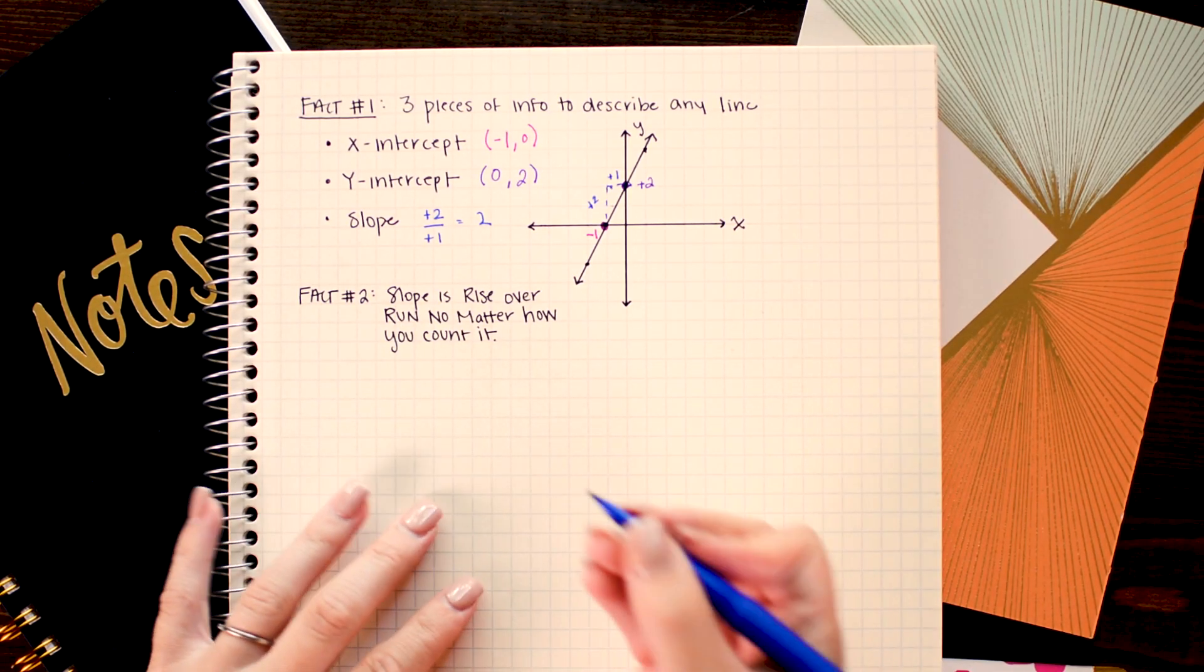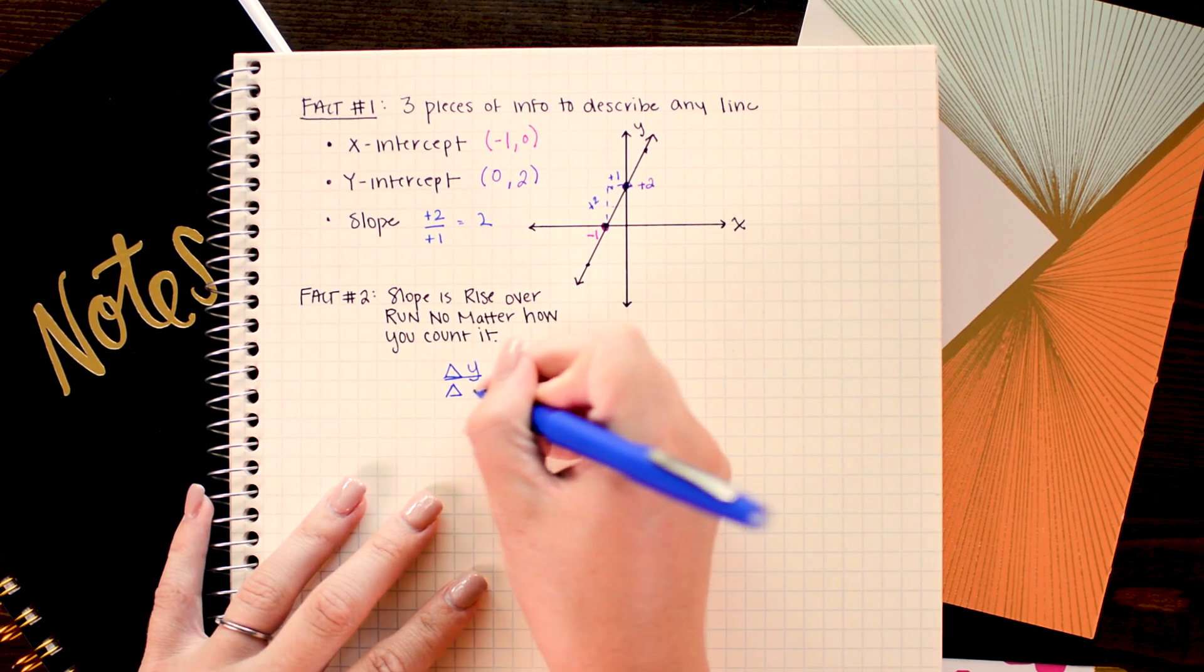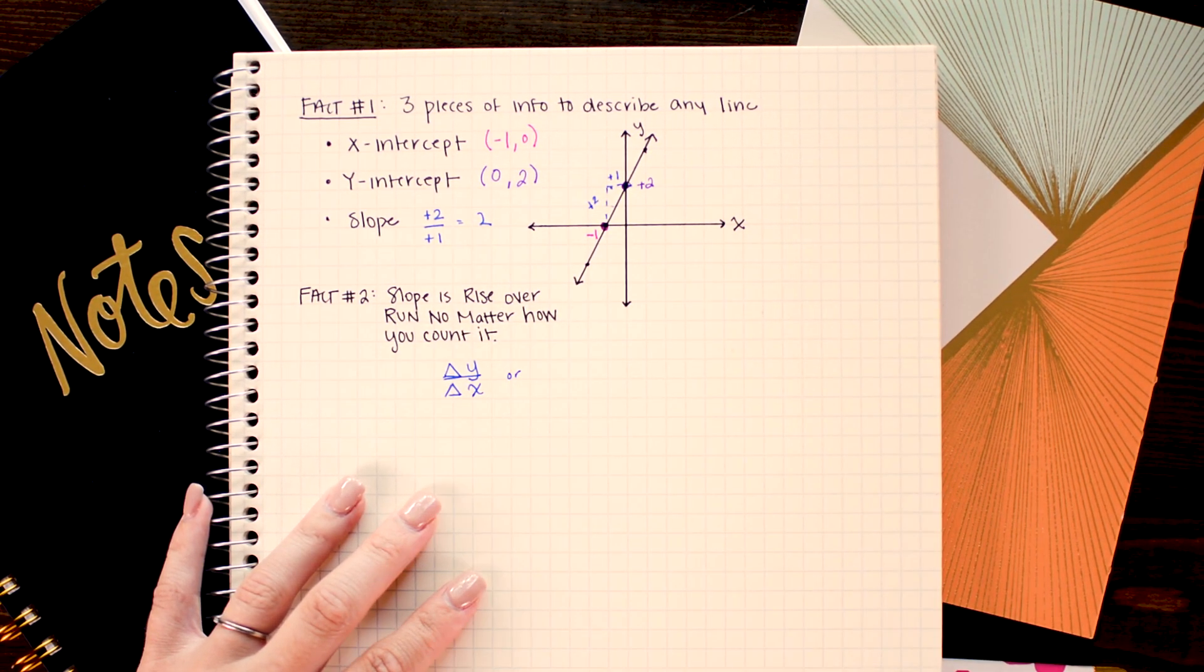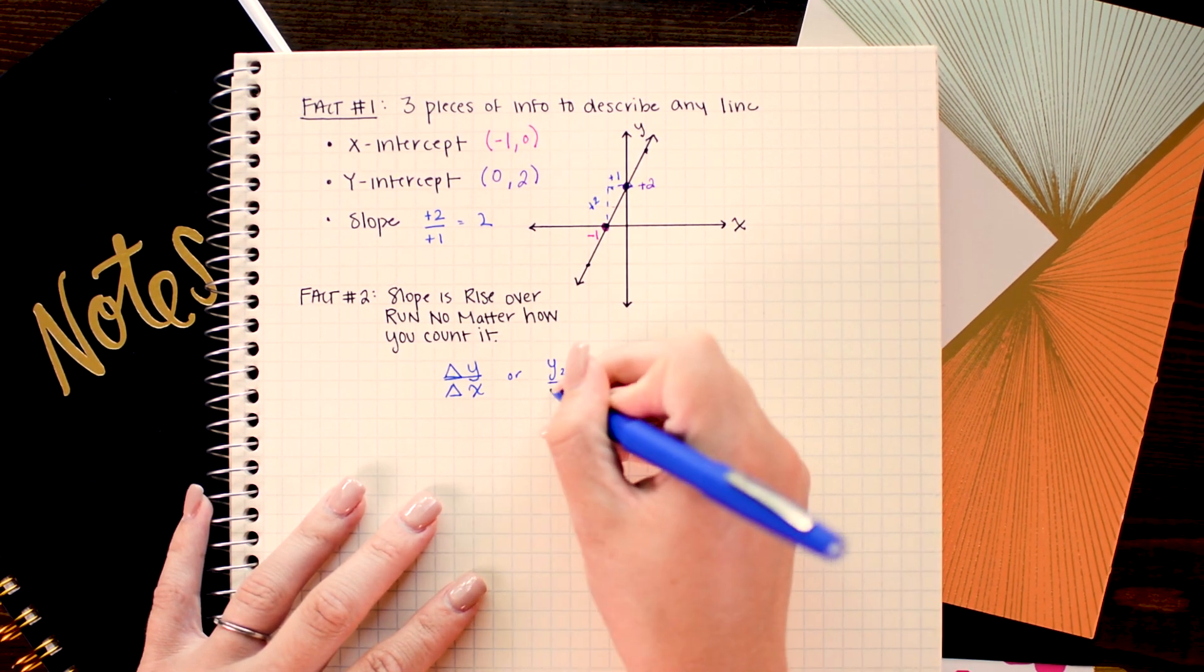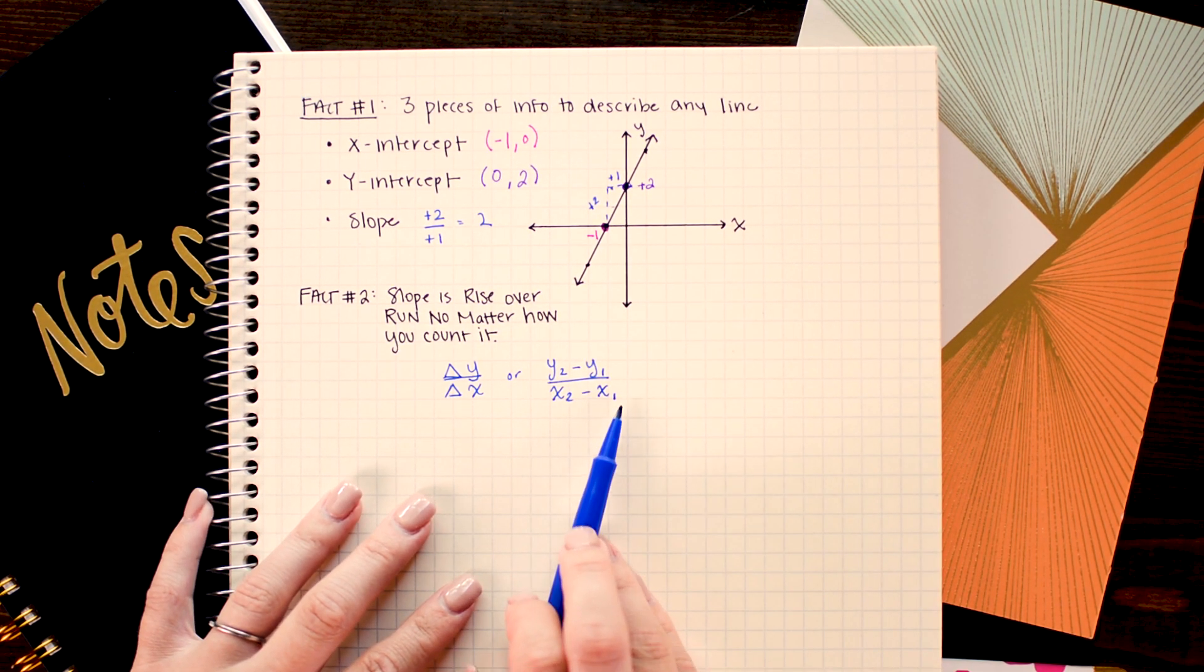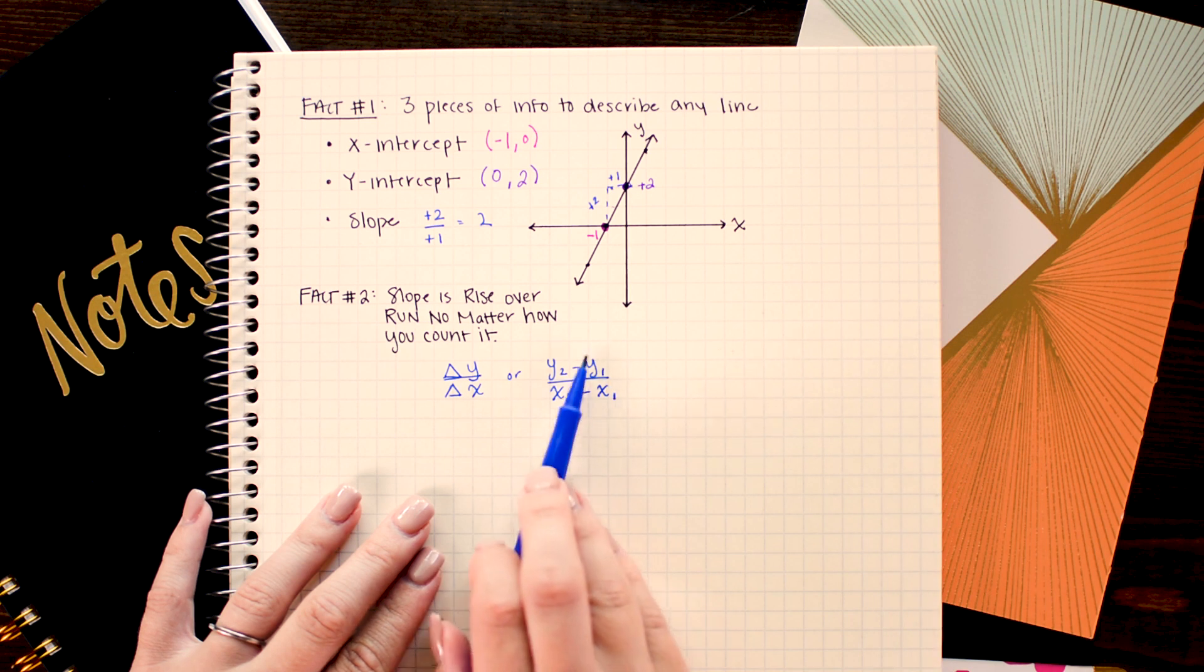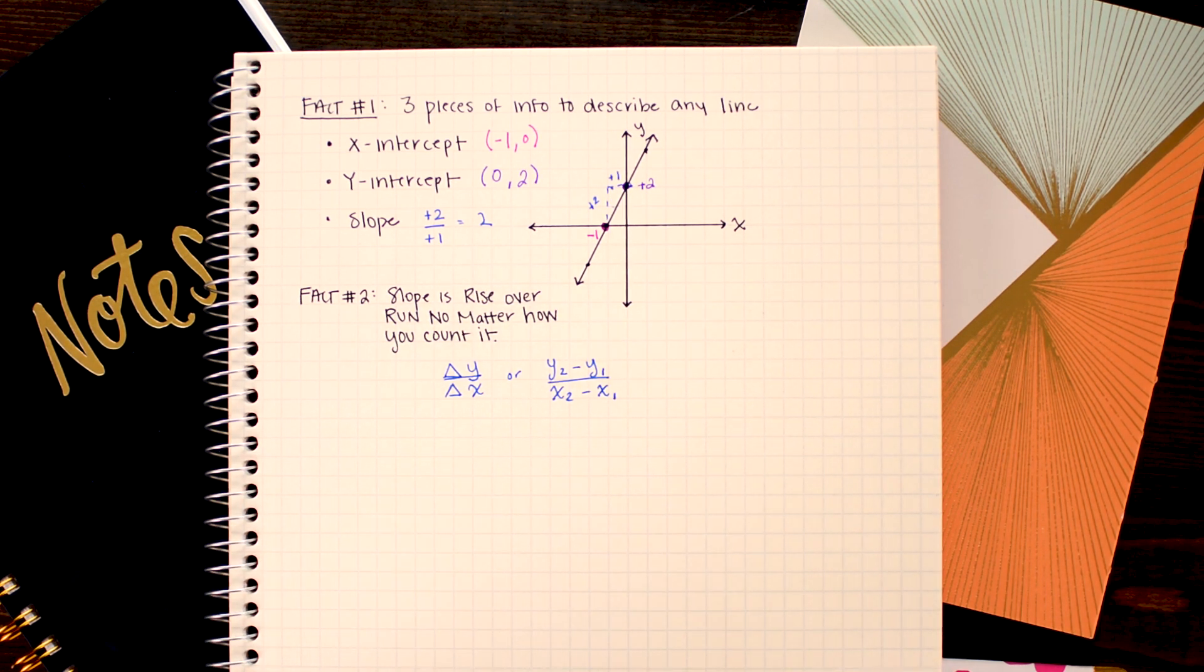No matter how you count your slope it will always reduce to the same number. And that number represents the rise over run. Slope is often described as the change in y over the change in x or sometimes in a formula they write that as y2 minus y1 over x2 minus x1 where the subscripts just indicate that there is one x y coordinate here and another x y coordinate used here. So no matter how we look at it though the slope is always rise over run.